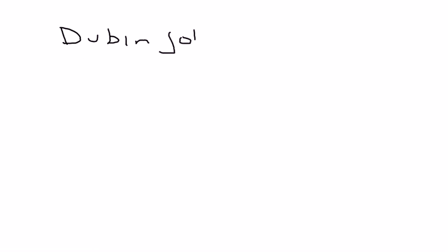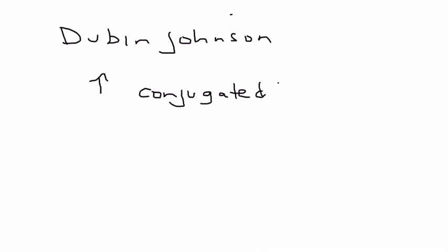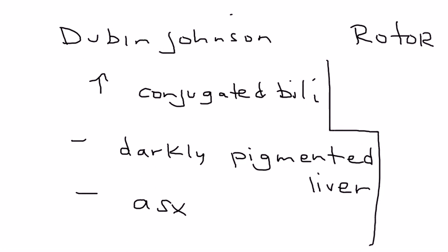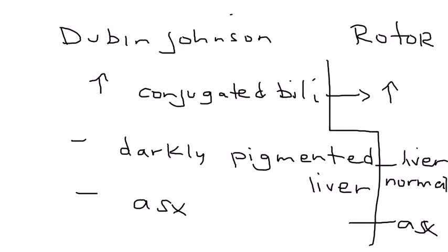Dubin-Johnson syndrome involves increased conjugated bilirubin in the blood and is benign — essentially asymptomatic. The only pathological finding is that there is a lot of dark pigment in the liver, which is really the only detectable abnormality. Rotor syndrome is even less symptomatic. It also involves elevated conjugated bilirubin, but the liver actually appears completely normal, so there is really not much going on with Rotor syndrome.